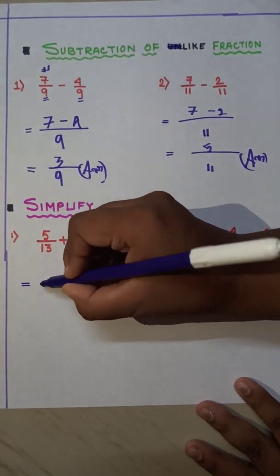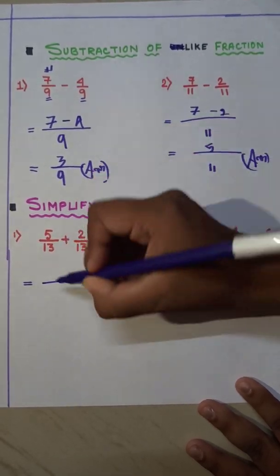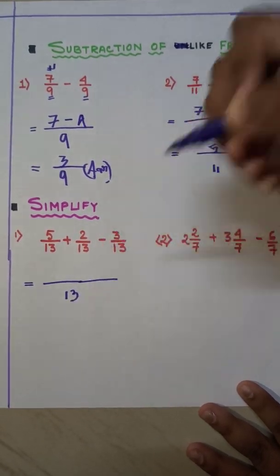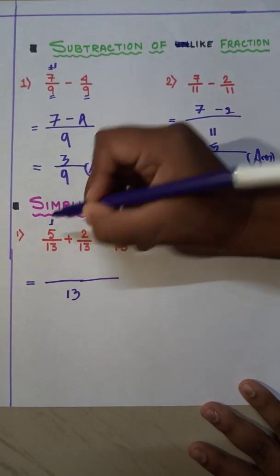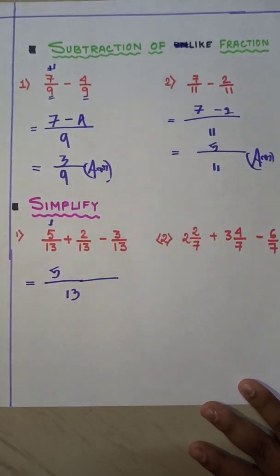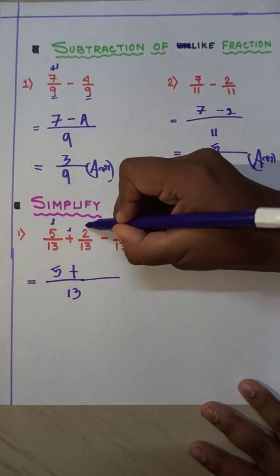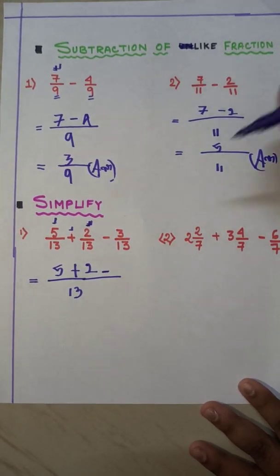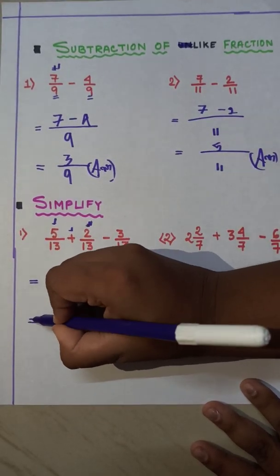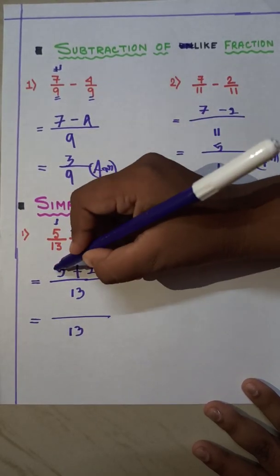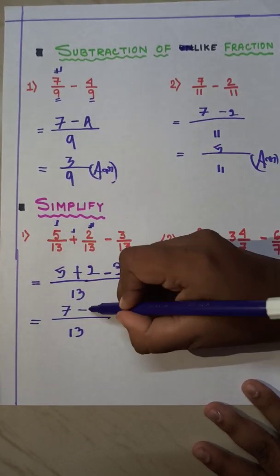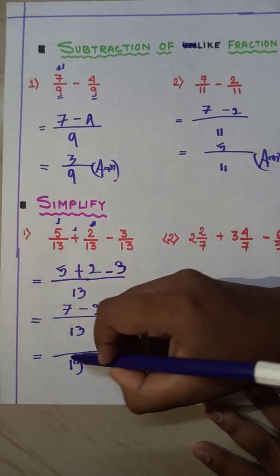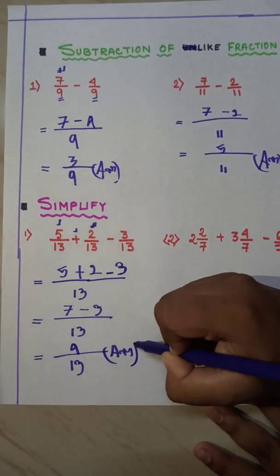We draw a big line and write the denominator — 13, 13, 13 — so we write 13. Now the numerator portion: first is 5, then addition sign, then 2, then subtraction sign, then 3. So we write 5 plus 2 minus 3. 5 plus 2 is 7, minus 3. And 7 minus 3 is 4. So the answer is 4 by 13.